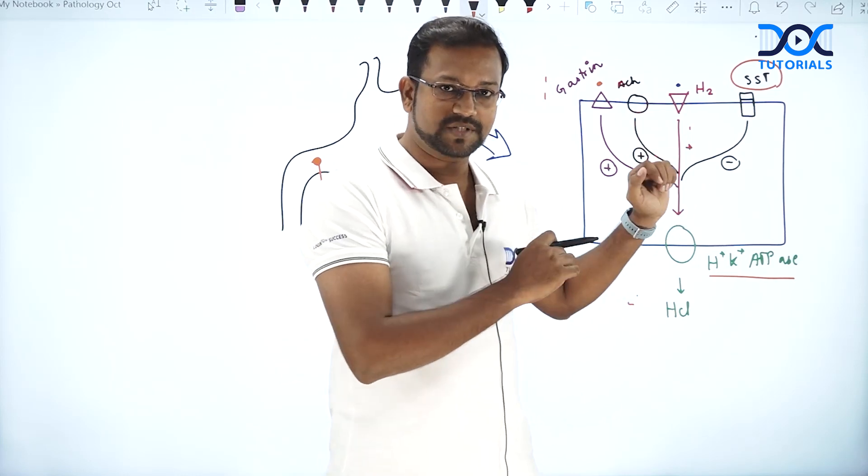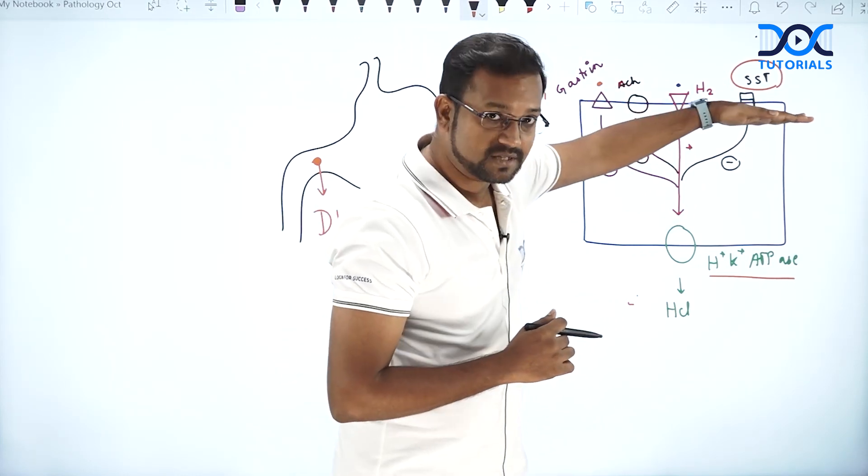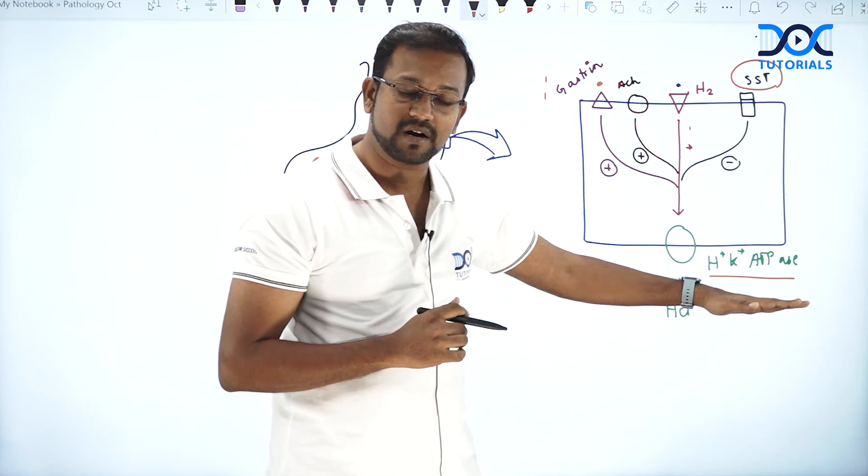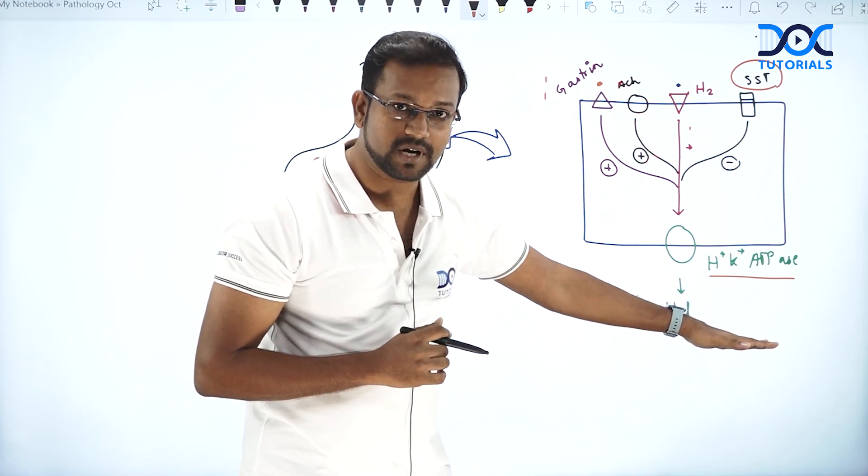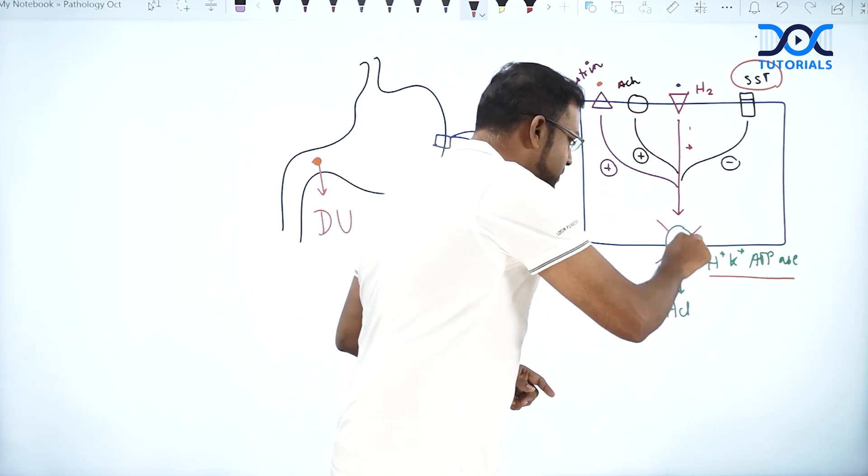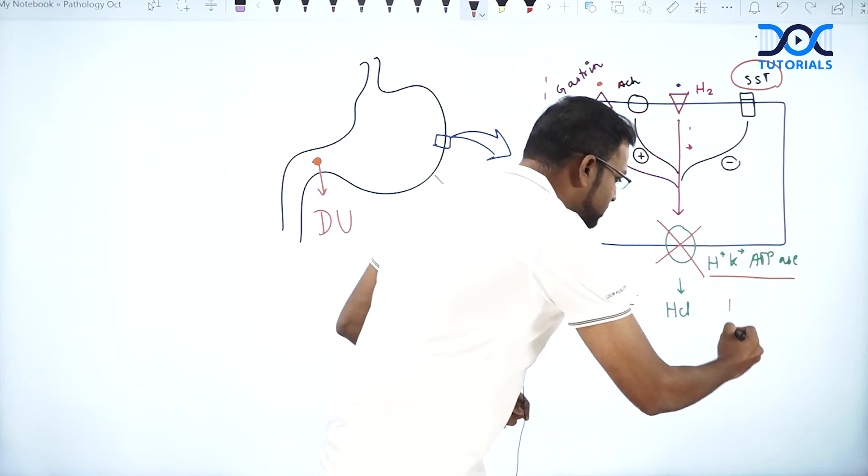What are the different drugs which we have? We can block all these different receptors. Apart from that, the parent drug which we have explained about prozole drugs, the parent drug which tend to inhibit this H plus K plus ATPase pump are your prozole drugs.